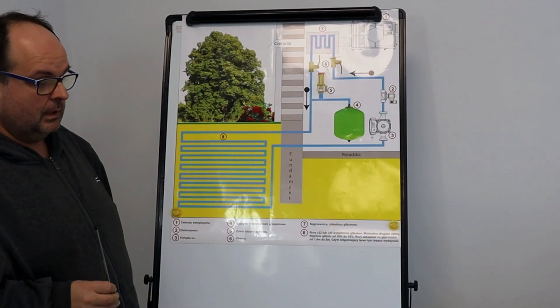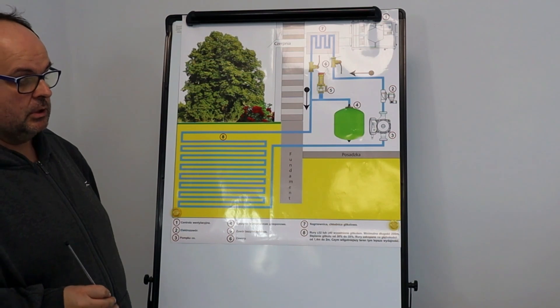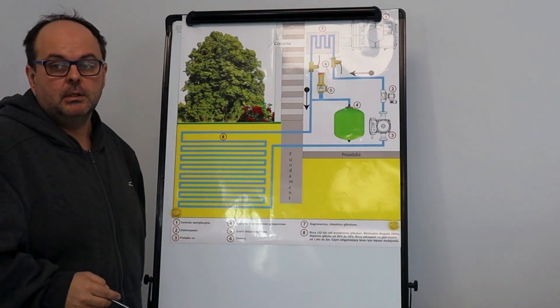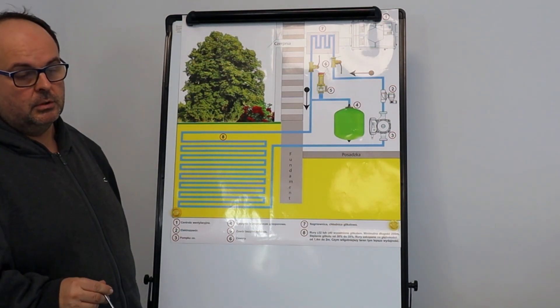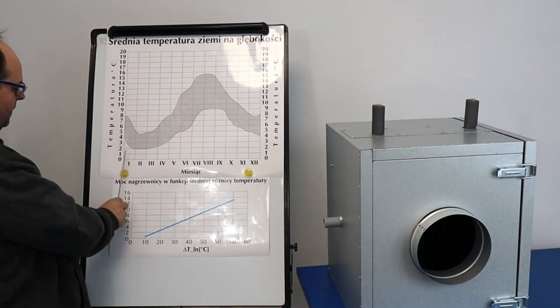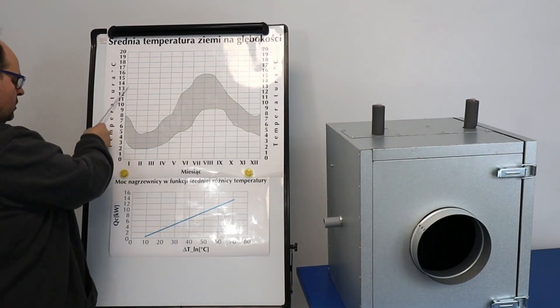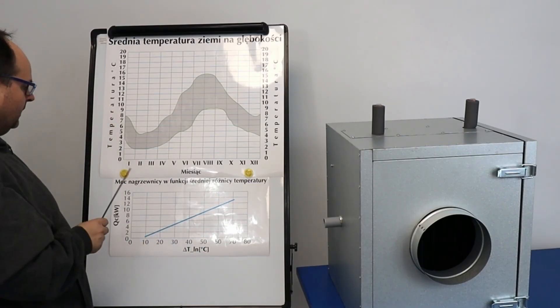Now I'll explain how to select the parameters for a cooler, how to calculate those temperatures, delta T when selecting coolers. Now I wanted to discuss the chart, the characteristics of the ground. Now at a depth of two meters, we have temperatures for January, February, March, April, May, June, July, and so on.